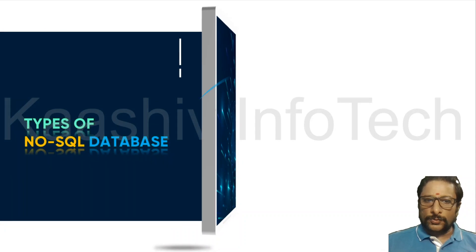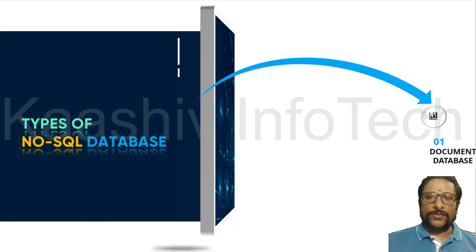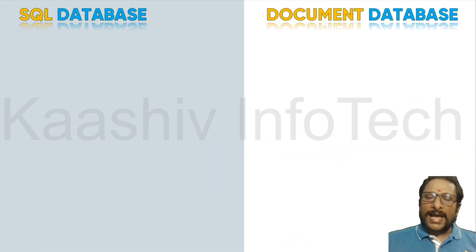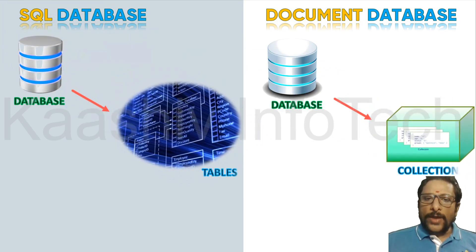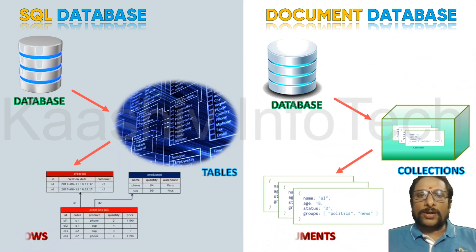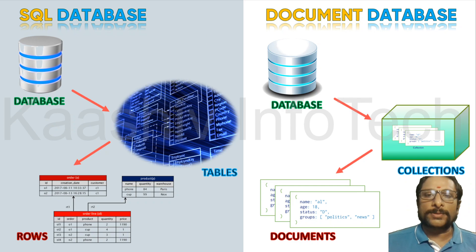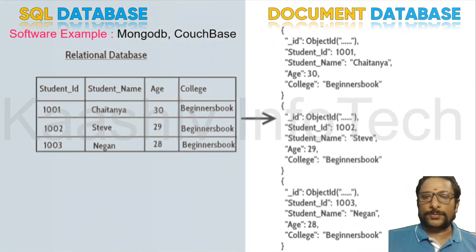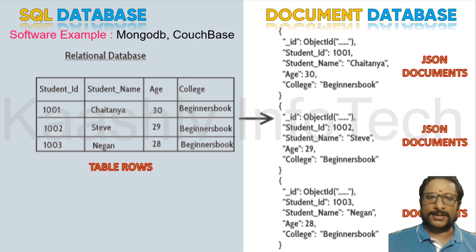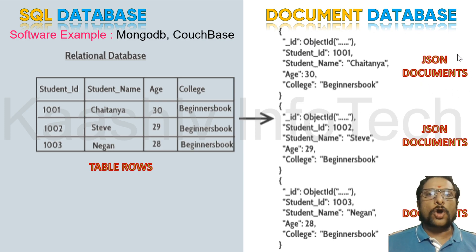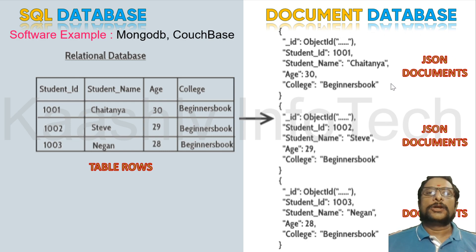The first type of NoSQL database is the document database. In a document database, data is stored as documents. Where a relational database has tables, a document database has collections. Where a relational database has rows, a document database has documents. These rows are converted into JSON — JavaScript Object Notation — documents. Every row becomes an individual document with a unique Object ID.